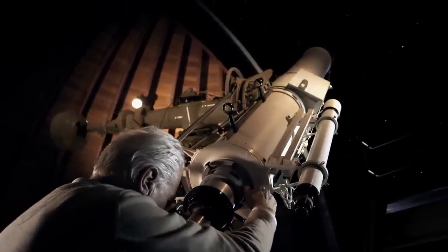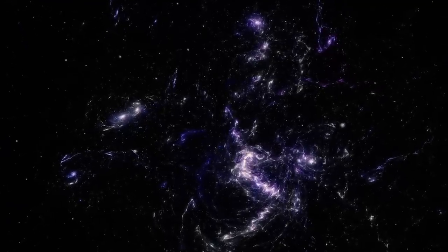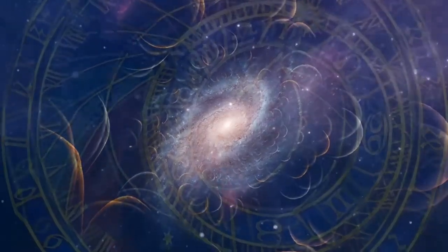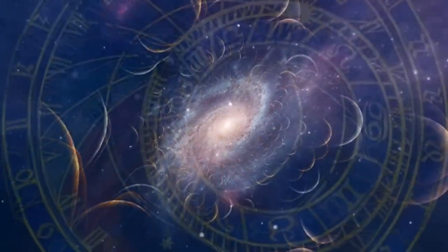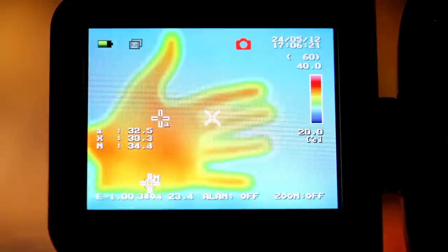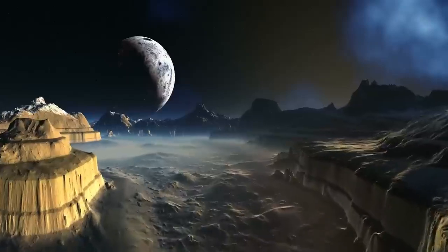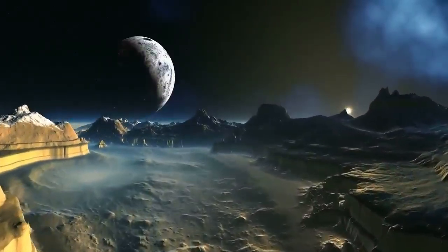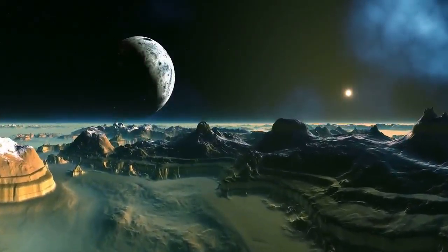However, due to the time delay in its light reaching us, researchers cannot be certain whether Betelgeuse is already in the final stages before a supernova or if it still has tens of thousands of years left in its life cycle. This paradox highlights the complexity of stellar evolution studies and reinforces the idea that when we gaze into the cosmos, we are always looking into the past.